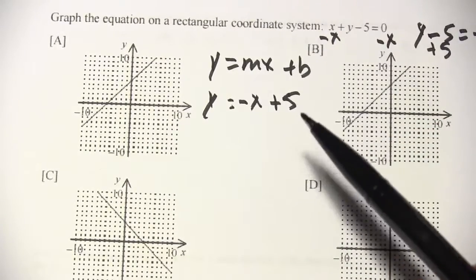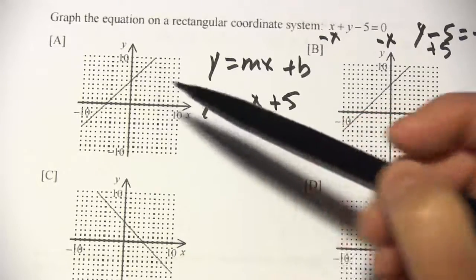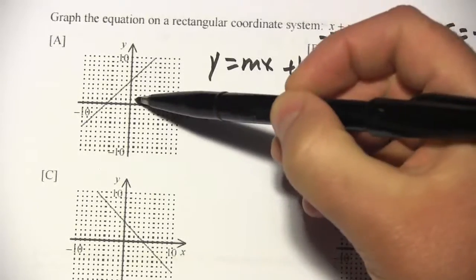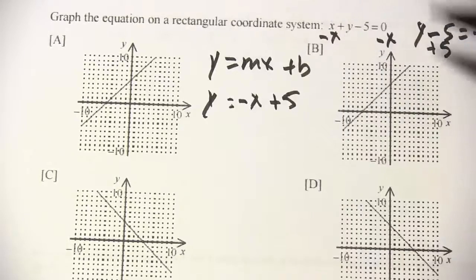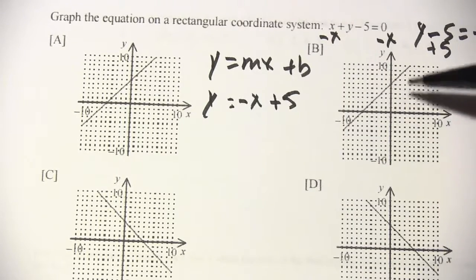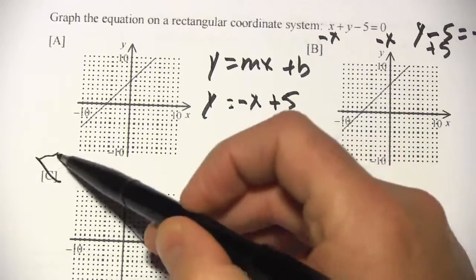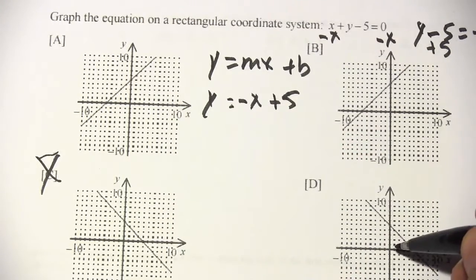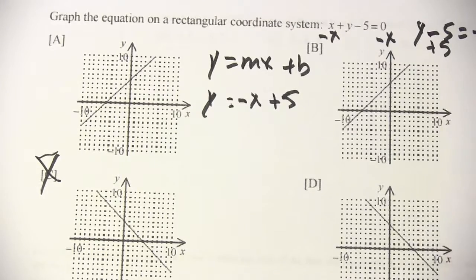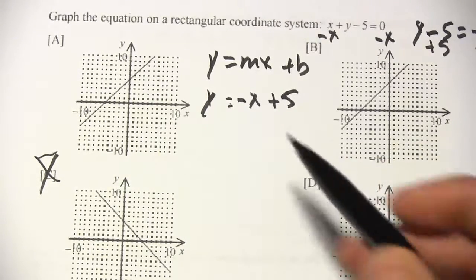So our y-intercept is 5. And as I look at these graphs, well, let's see. 1, 2, 3, that one looks like 5. That one looks like 5. That looks like 4. 1, 2, 3, 4. Yeah, I don't think it's going to be c. And this is 1, 2, 3, 4, 5. So it could be d. So we've eliminated one already.